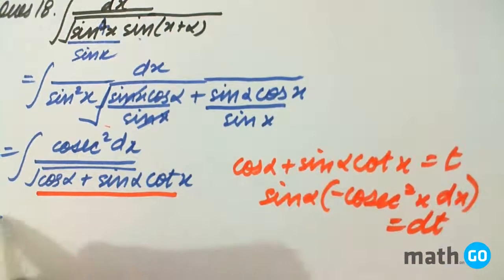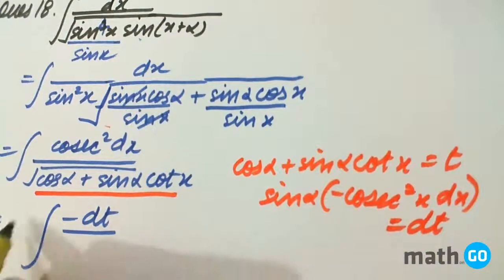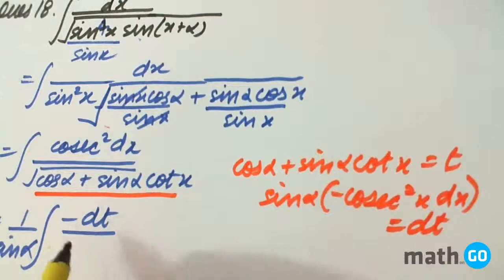So we will get minus dt upon integration. Sin alpha will be there with power, that is t to the power 1 by 2.